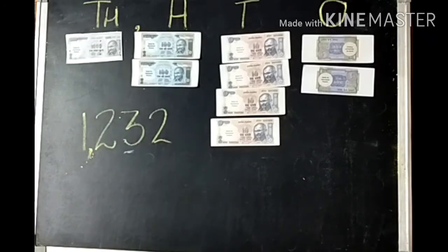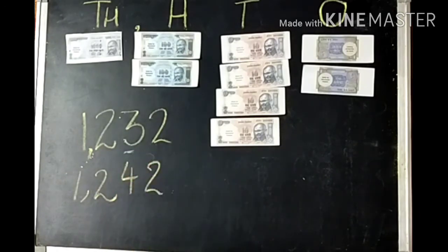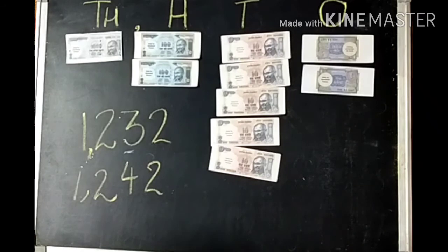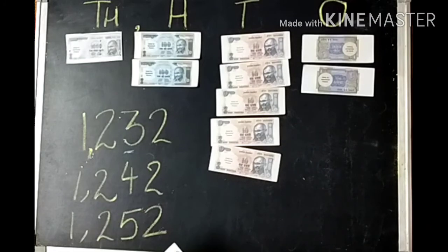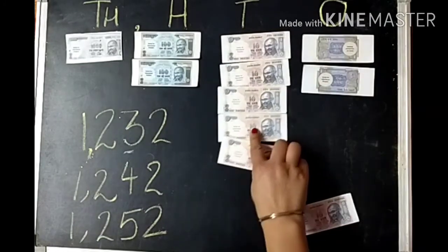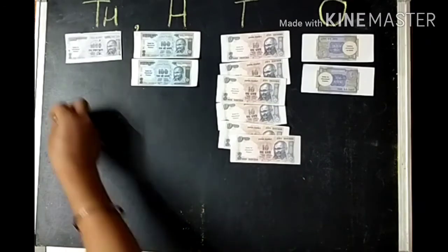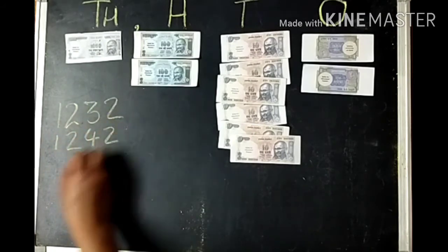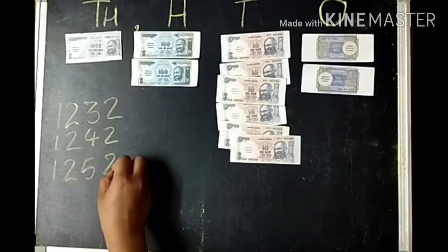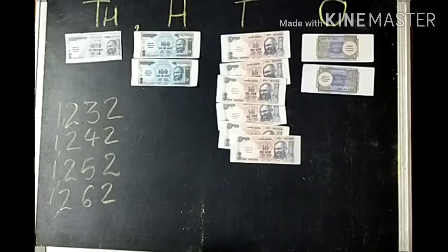So we write this number as one thousand two hundred and forty-two. If I put one more ten in it, it becomes one thousand two hundred and fifty-two. Adding another ten: one thousand two hundred and thirty-two, one thousand two hundred and forty-two, one thousand two hundred and fifty-two, and now it has become one thousand two hundred and sixty-two.